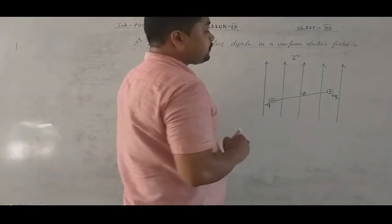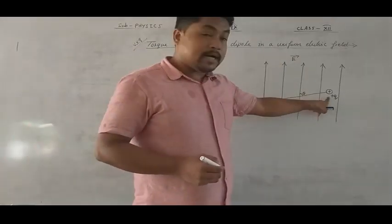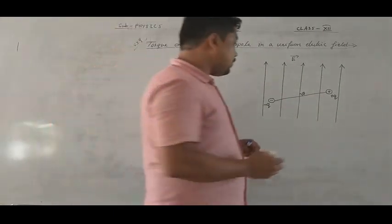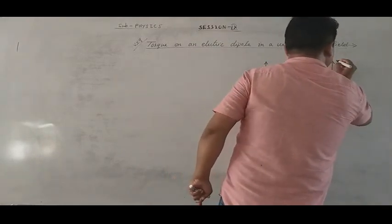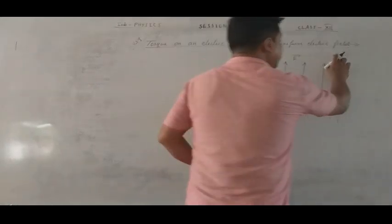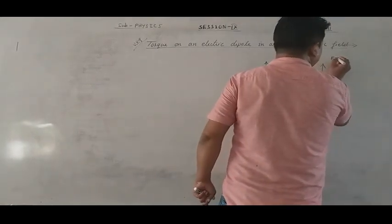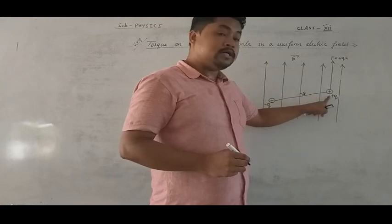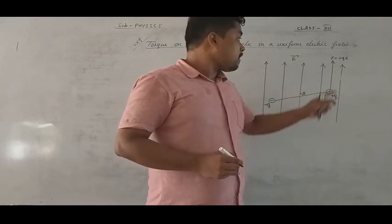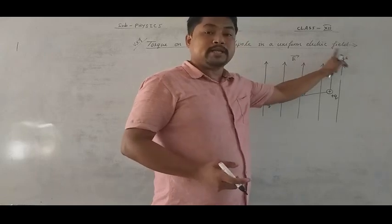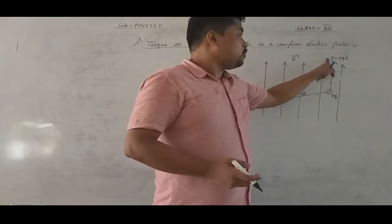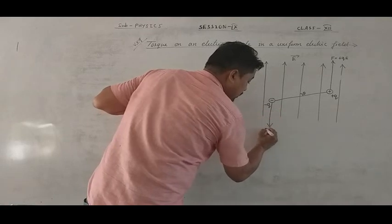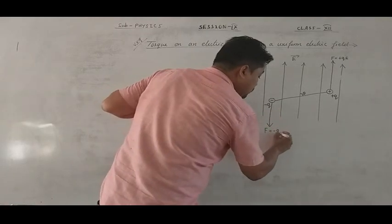The force on the negative charge and the force on the positive charge act in opposite directions. For the plus q charge, the force is equal to q into E — that is, electric force on the charge due to the electric field equals q times E. Similarly, for the negative charge, the force is equal to minus q times E, opposite to the direction of the electric field.